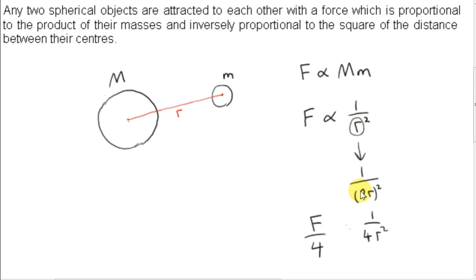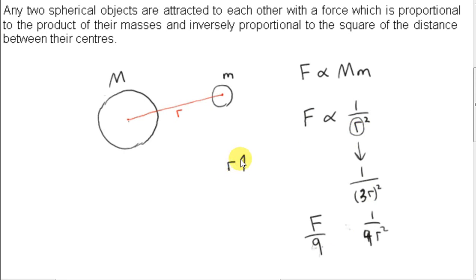We can imagine replacing little r with three r — multiplying the distance between the centers by three. We're going to get a nine here, so the force will go down by a factor of nine, and the force will only be one-ninth as strong. That's what is meant by the gravitational force being inversely proportional to the square of the distance between the two masses. In general, as the distance goes up, the force will go down in this inverse proportional relation.